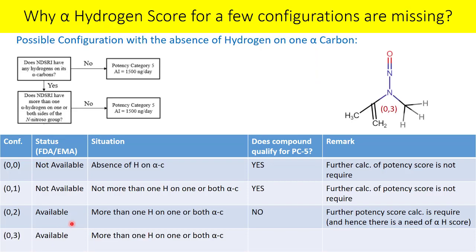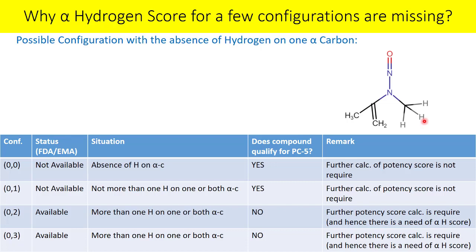The fourth possible configuration is 0,3 — no hydrogen on one alpha carbon and three hydrogens on the other. This compound does not qualify for potency category 5, and hence further potency score calculation is required. Therefore there is a need for the alpha hydrogen score, and the guidance has provided it for the 0,3 configuration.